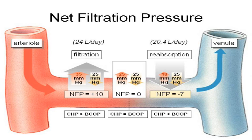Looking at the numbers: at the arterial end, blood pressure is about 35 and osmotic pressure is about 25, giving a net of plus 10 — fluid is forced out. In the middle they're pretty much equal. At the venous end osmotic pressure stays at 25 while blood pressure has dropped to about 15, so reabsorption occurs. The osmotic pressure doesn't really change; it's the blood pressure that goes from 35 to 25 to about 15. About 24 liters of fluid a day are filtered out of the capillaries — and given that you only have 4 to 5 liters of blood total, with at least 40% being red cells, that's remarkable. Fortunately, most of it is reabsorbed.